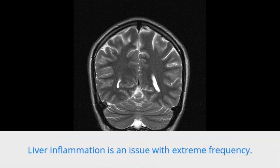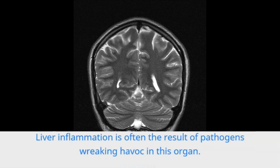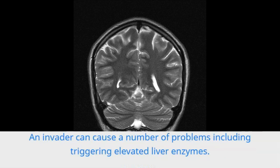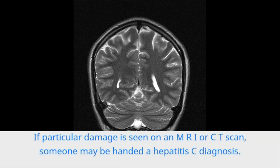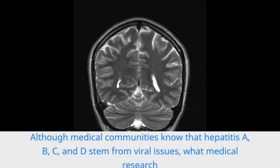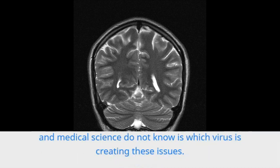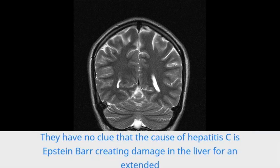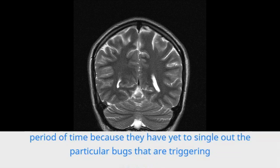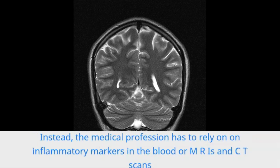Inflammation in various organs can lead to major health issues, but it's the pathogen or injury that is the true cause. Liver inflammation occurs with extreme frequency and is often the result of pathogens wreaking havoc in this organ. An invader can cause a number of problems, including triggering elevated liver enzymes. If particular damage is seen on an MRI or CT scan, someone may be handed a hepatitis C diagnosis. Although medical communities know that hepatitis A, B, C, and D stem from viral issues, what medical research and science do not know is which virus is creating these issues.